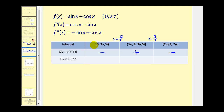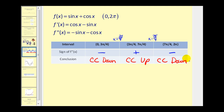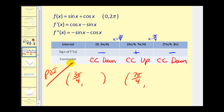On the first interval, since the second derivative is negative, the function is concave down. It's concave up in the second interval, and concave down in the third interval. Points of inflection occur where the function changes concavity. Notice it changes from concave down to concave up at x equals three pi over four — that's a point of inflection. And also at x equals seven pi over four, we have a point of inflection.